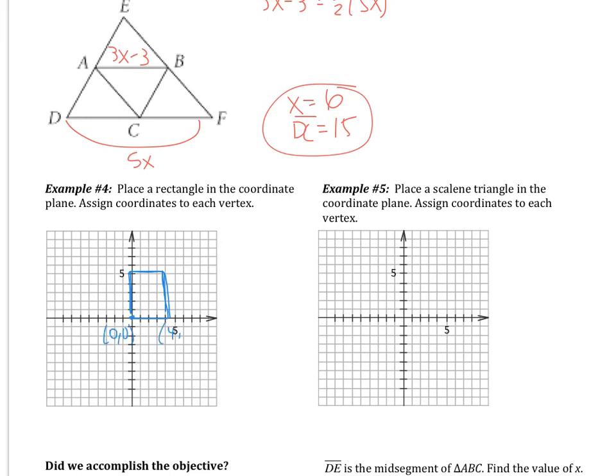That's a rectangle. Now all I have to do is put coordinates at each vertex. So the origin is 0, 0, this point is 4, 1, this is 4, 5, and this is 0, 5. So there we go. That's our coordinate proof. That's it.